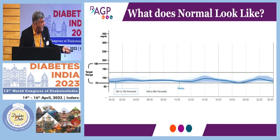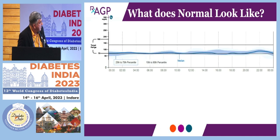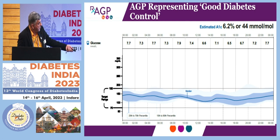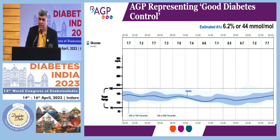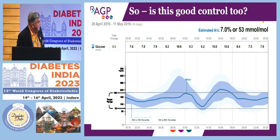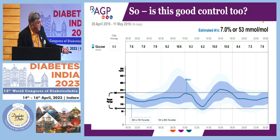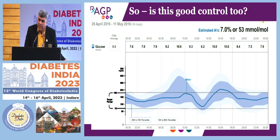This is what a normal profile looks like — a flatter line derived from individual data points. This is what we may accept as good control in diabetes, with not too much variability — neither interday nor intraday — and staying within the range. When you see spikes and sugars going out of range, we know that may not be the best profile, showing variability and excursions. We always talk about exposure, variability, and stability.